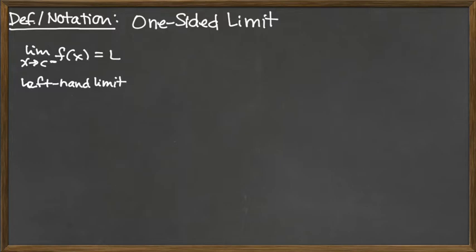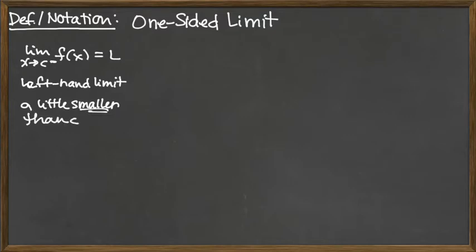When we're thinking about the left-hand limit, C minus, we're really thinking about values a little bit smaller than C. Remember that C is an x value, so values that are a little bit smaller than C on the x-axis would be to the left of C. That's how we get the left-hand limit when we have the superscript of minus.